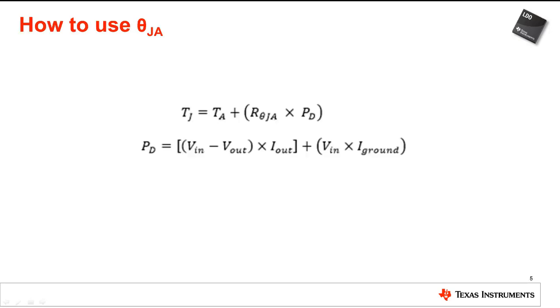To use theta JA in your application, there are only two parameters you need to know: ambient temperature and power dissipation. You should use the worst case ambient temperature for your calculations. Power dissipation can be calculated as V in minus V out times I out plus V in times I ground. Once you have these parameters, you can plug them into the equation for TJ and get the worst case junction temperature.